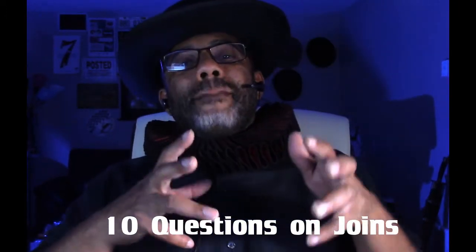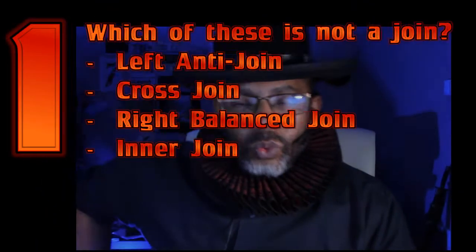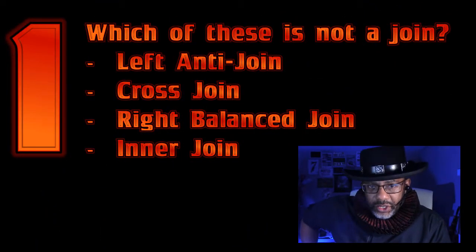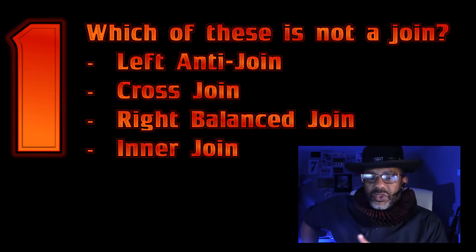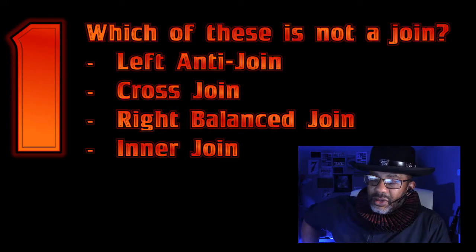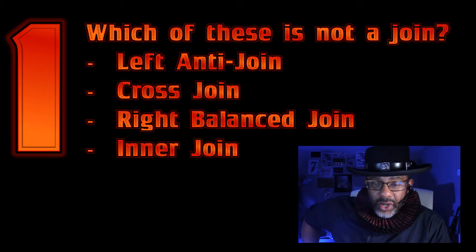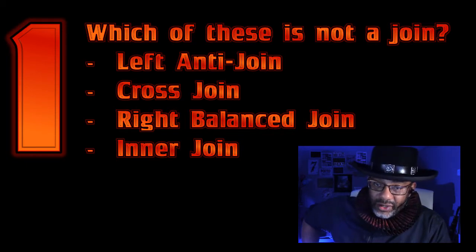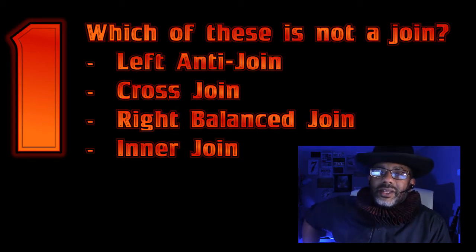Every question in this episode is gonna be about joins. My last few videos covered this topic, so if you're ready for this sport, you've watched the videos and you are ready for this test on joins. Here we go — question one: when working with data we have to do joins. Which of these is NOT a join? Left anti-join, cross join, right balance join, or inner join? Computer G, what is the answer?